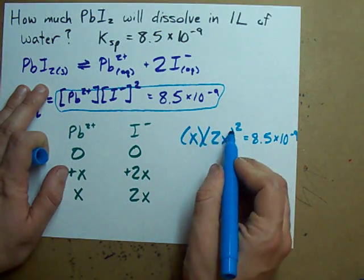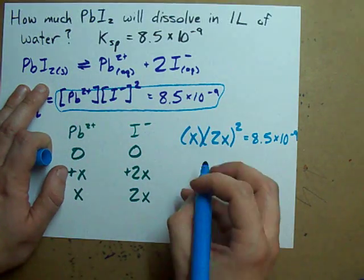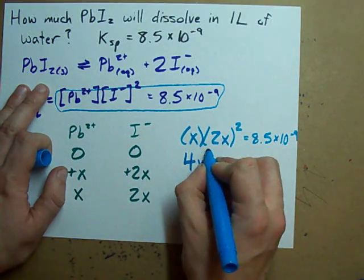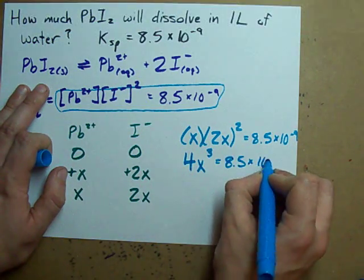When you multiply these together, when you square this, you get 4X squared. Then you multiply it by another X. You get 4X cubed equals 8.5 times 10 to the minus 9.